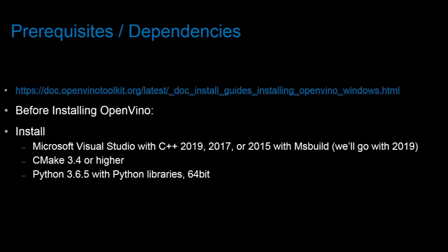The Microsoft Visual Studio with C++ version that we'll be installing is 2019. The CMake version will be 3.4 or higher. For those not familiar with CMake, it's designed to support directory hierarchies and applications that depend on multiple libraries, used in conjunction with native build environments such as Make, Apple's Xcode, and Microsoft Visual Studio. We'll also need to install Python 3.6.5, along with all of the libraries, in a 64-bit instruction set.